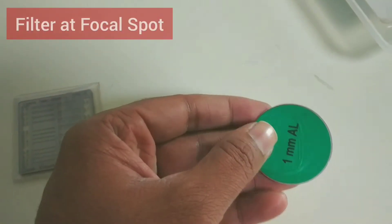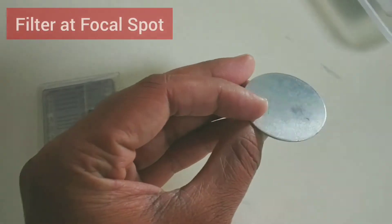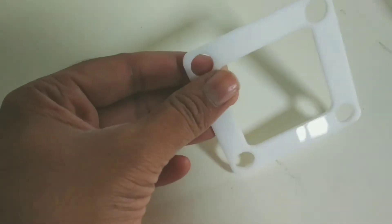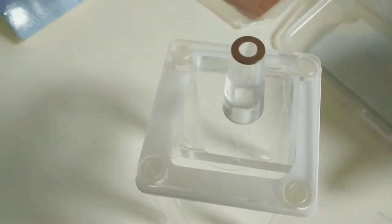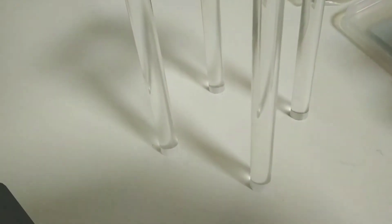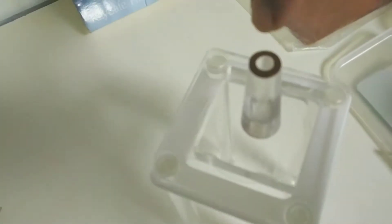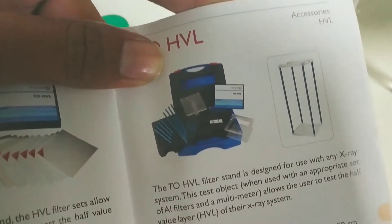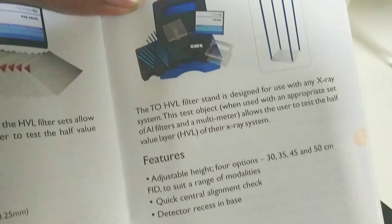This filter is used at the focal spot of the X-ray. It is kept at the front of the X-ray tube. You can see one copper circle is present on the upside. The HVL filter is standard designed for use with an X-ray system. This test object, when used with an appropriate set of aluminum filters and a multimeter,